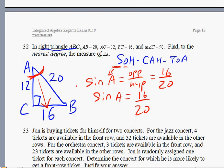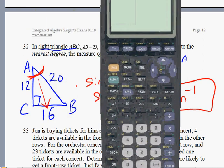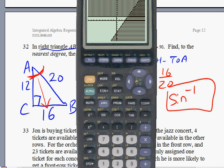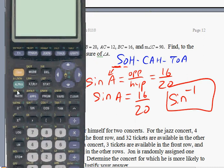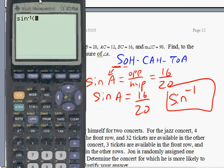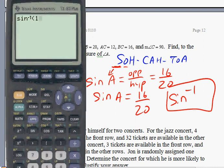And because we're looking for the missing angle and not missing side, for missing angle we have to use the inverse or sine to the negative one function on our graphing calculator. Let's whip that bad boy out. There you go. Let's clear this. So we press sine to negative one. There you go, you can see it. And 16 divided by 20. Press enter button and you get 0.92.